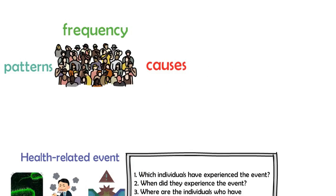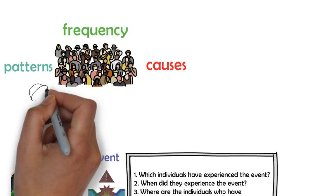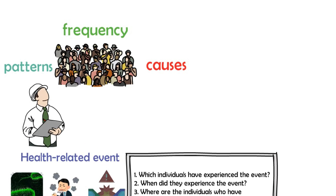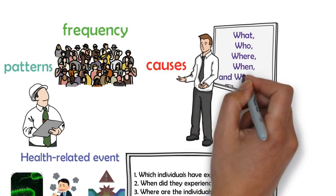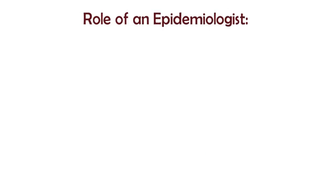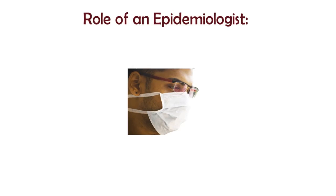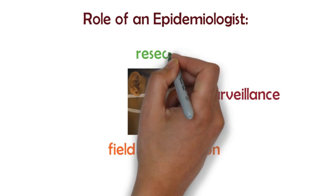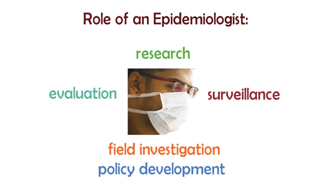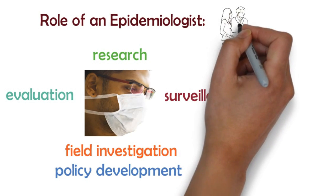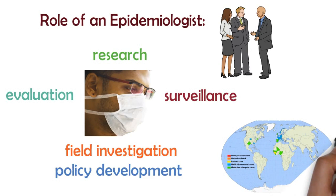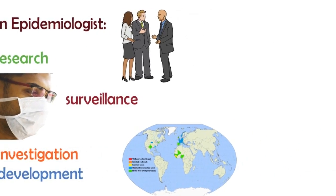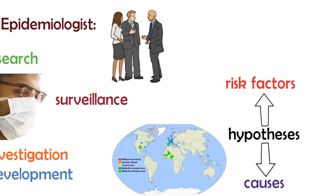As the basic science of public health, epidemiology includes the study of the frequency, pattern, and causes of health-related states or events in populations and the application of that study to address public health issues. Epidemiologists use a systematic approach to assess the what, who, where, when, and why of these health states or events. Core epidemiologic tasks include public health surveillance, field investigation, research, evaluation, and policy development. Epidemiologists look at differences in disease and injury occurrence across populations to generate hypotheses about risk factors, generally using cohort or case-control studies to evaluate these hypotheses.